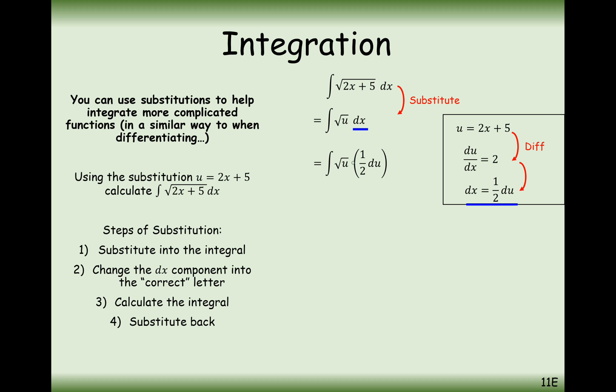In the question, we're going to replace dx with a half du. These two components here are effectively being multiplied together. When we've got a half inside as a scale factor, we can pull it out to the front — we can factorise this half to the front. And remember, with square roots, it's better to turn it into an index so that we can increase the power by 1 divided by the new power. Now we're integrating with respect to the correct letter du.